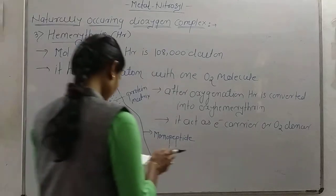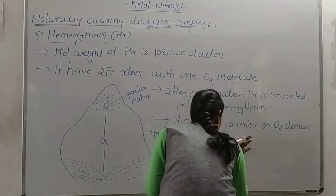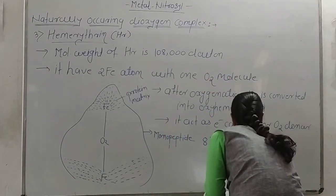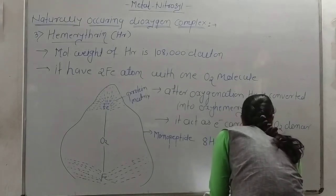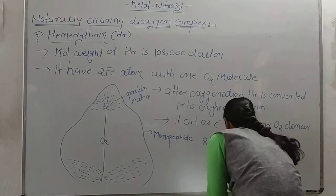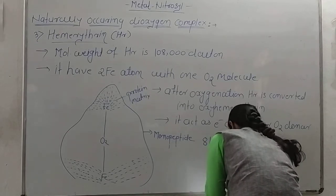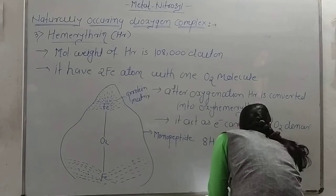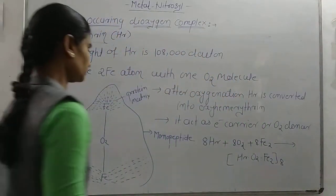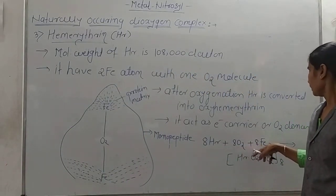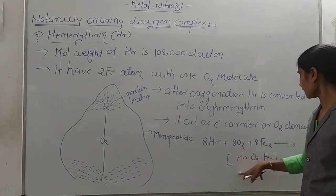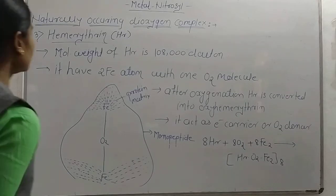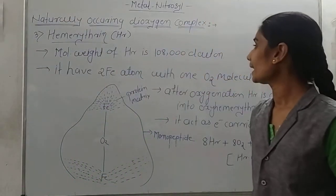The reaction shows that eight molecules of hemerythrin react with eight molecules of O₂. After oxygenation, hemerythrin reacts with oxygen, and the iron atoms are involved such that it is converted into oxyhemerythrin. This is the third naturally occurring dioxygen complex: hemerythrin.